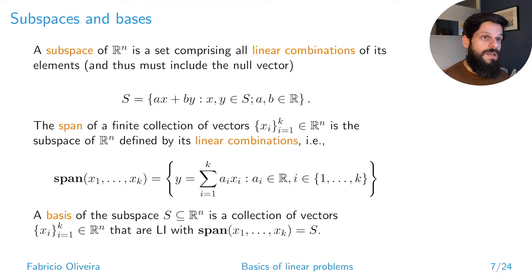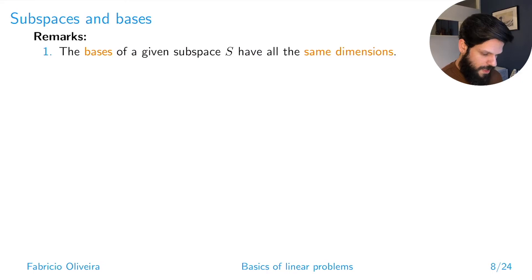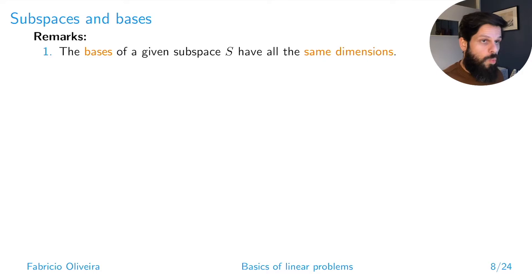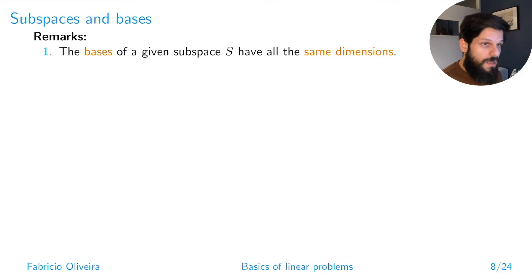Some important remarks: all bases of a given subspace have the same dimension. It doesn't matter which basis you choose — the number of vectors in any basis for a given subspace is always the same, and that number is exactly the dimension of the subspace.